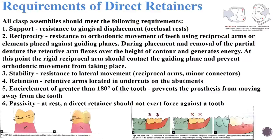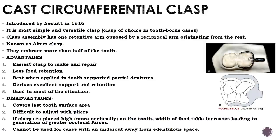Moving on to the circumferential clasp: a retainer that encircles a tooth by more than 180 degrees, including opposite angles, and generally contacts the tooth throughout the extent of the clasp, with at least one terminal located in an undercut, is known as a cast circumferential clasp. It was introduced by Nisbir in 1916 and is the most simple and versatile clasp — the clasp of choice in tooth-borne cases. It is also known as the Akers clasp.